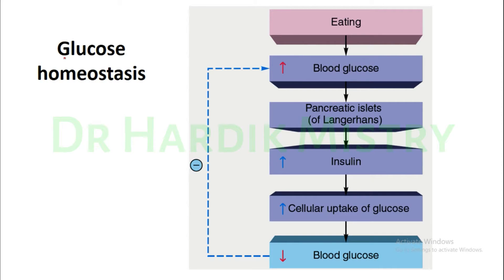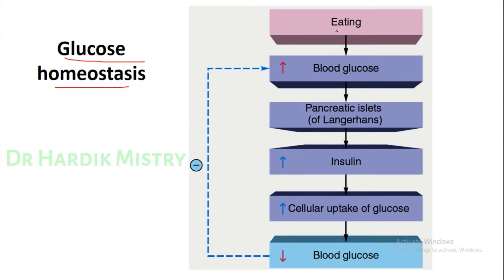Next: glucose homeostasis, another example of the negative feedback loop. After a meal, there is an increase in blood glucose level. The pancreatic islets of Langerhans are stimulated by this increase in blood glucose level, and the beta cells present in the islets specifically secrete insulin.